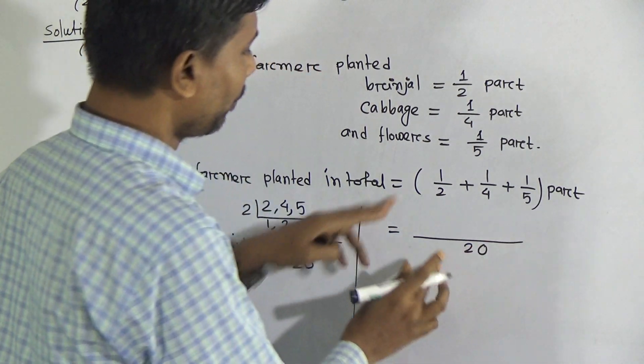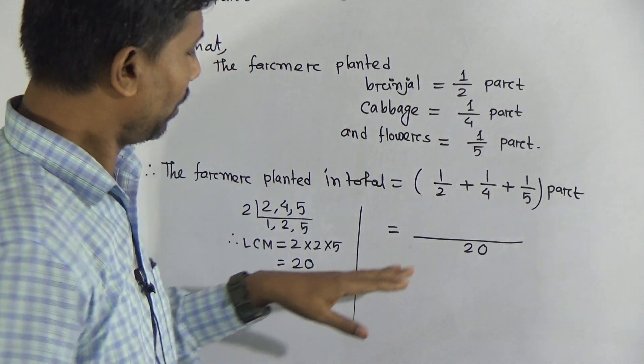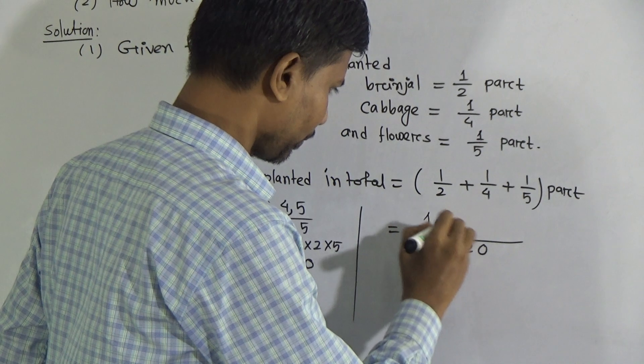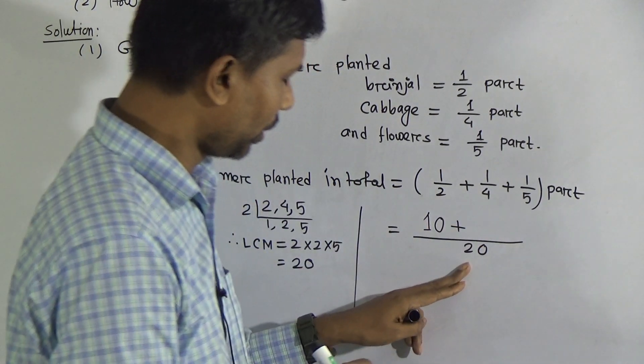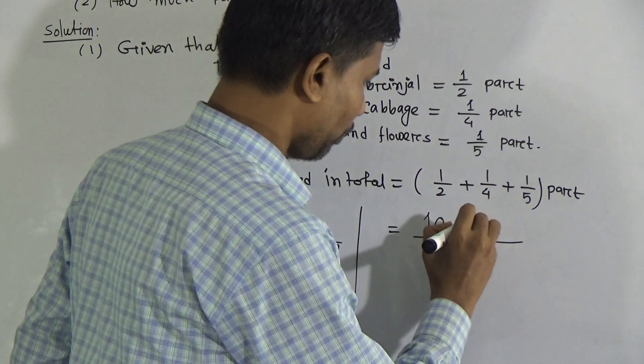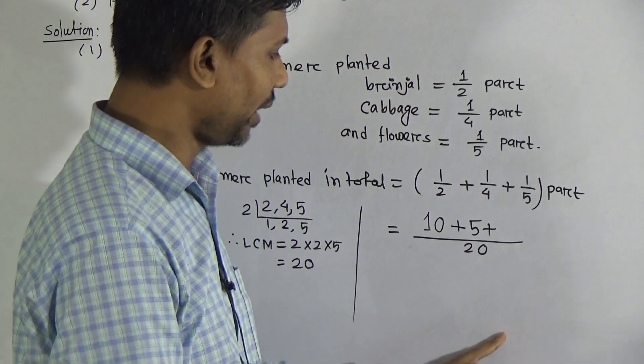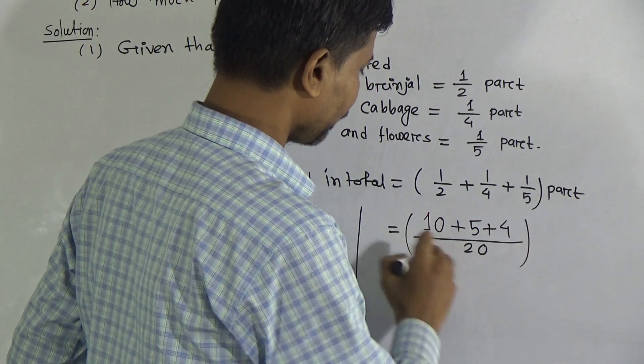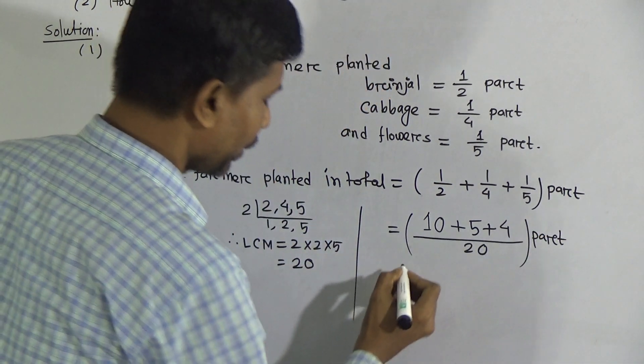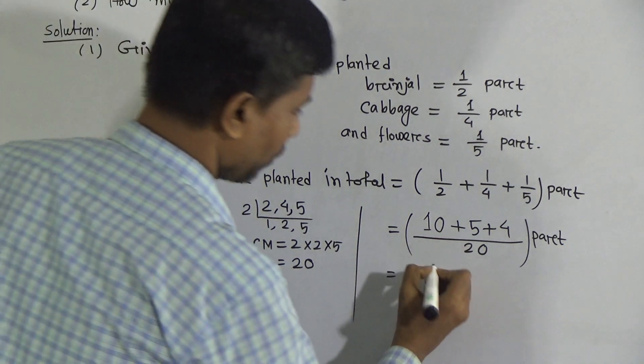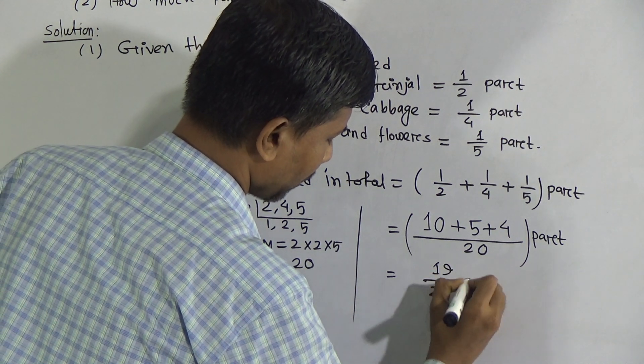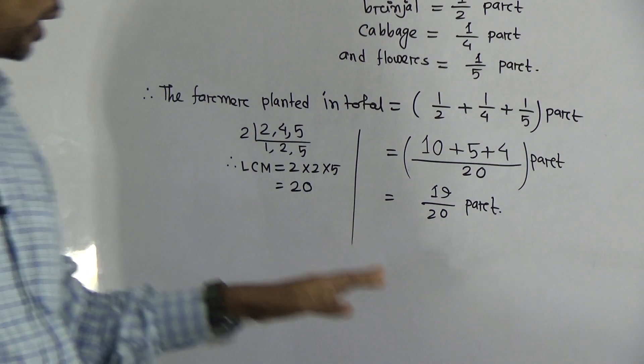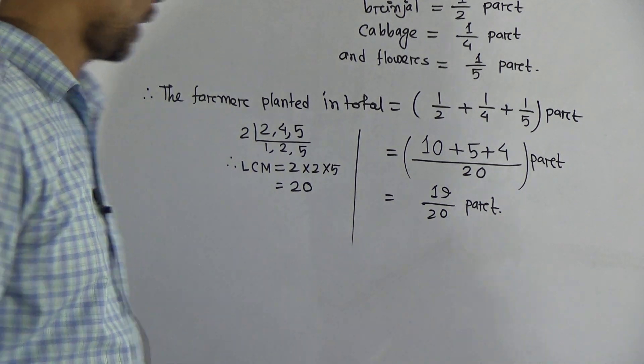Write 20. Now divide 20 by 2, we get 10, multiply with 1, that means 10. Plus divide 20 by 4, we get 5, multiply with 1, that's 5. Plus divide 20 by 5, we get 4, multiply with 1, that's 4. This equals 10 plus 5 plus 4, which is 19/20. The farmer planted in total 19/20. Now write the answer: 19/20 part.